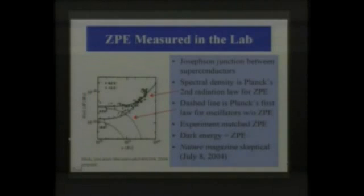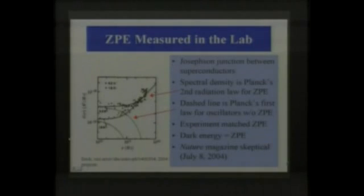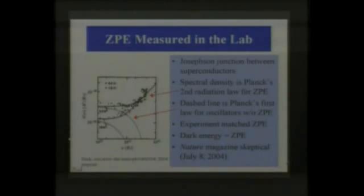What he found very fascinating, besides this particular graph — notice the frequency goes up to around 10 to the 12th — is that they also map over to the dark energy spectrum. He would like to propose that the cutoff for zero-point and dark energy are the same, but there's a lot of controversy for that. The fascinating part is we can now look at Josephson Junctions or diodes as being a source of zero-point energy, and he's saying dark energy equals zero-point energy.